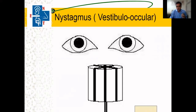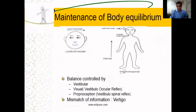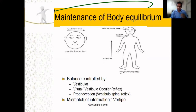Nystagmus is an important sign we should look for in patients who are having vertigo. Basically, the balance is maintained because the position of the head and body is sent to the brain, and this is due to three important factors.